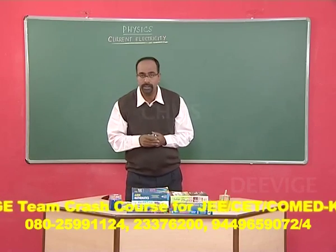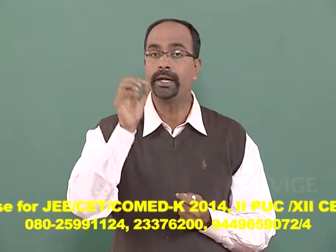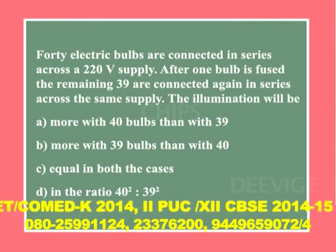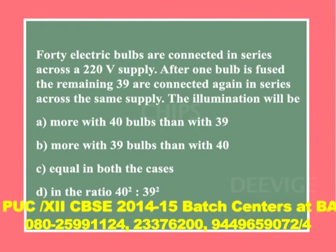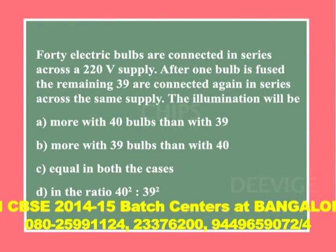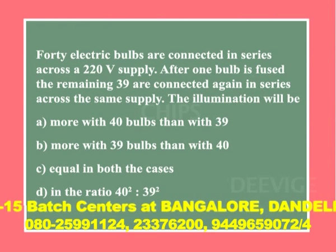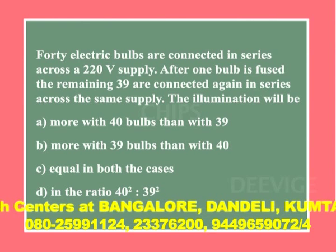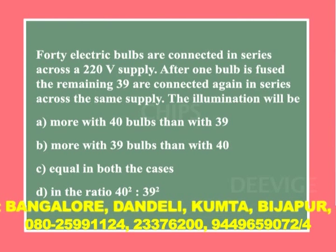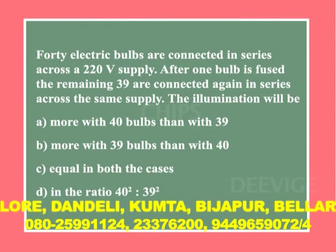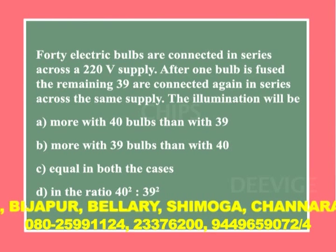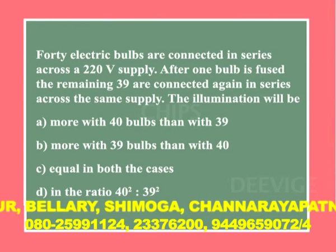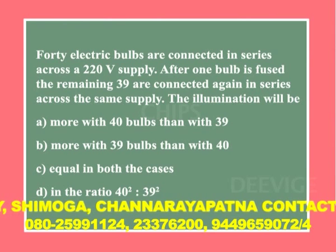This problem is based on electricity passing through series bulbs and its illumination. 40 electric bulbs are connected in series across a 220 volt supply. After one bulb is fused, the remaining 39 are connected again in series across the same supply. Is the illumination: option A more with 40 bulbs than with 39, option B more with 39 bulbs than with 40, option C equal in both cases, or option D in the ratio 40 squared to 39 squared?